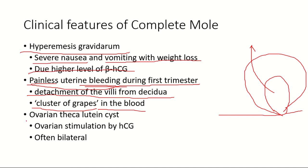There can also be ovarian theca-lutein cysts due to ovarian stimulation by hCG. Because hCG production is so high in complete mole, it stimulates the theca interna cells of the ovaries, causing cysts. Due to the very high hCG level, both ovaries are often stimulated, leading to a bilateral condition.